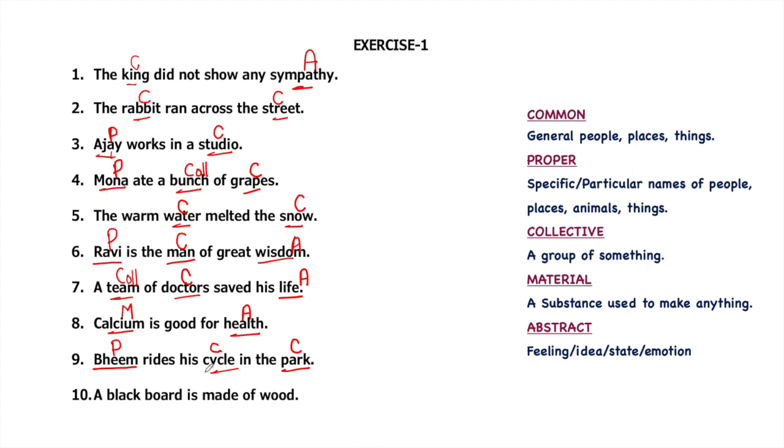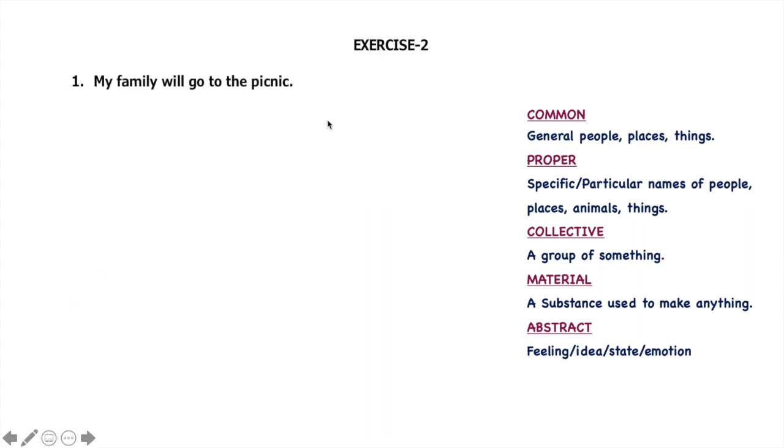A blackboard is made of wood. So blackboards can be many, it's a common noun. But wood is a substance that is used to make blackboard, so here wood will be material noun. My family will go on a picnic. So family is a group of members, it's a collective noun. And picnic is a common noun. Picnic is a place. There is no freedom to speak in this city. Freedom is a state of being free, it's an abstract noun. And cities are many, it's a common noun.